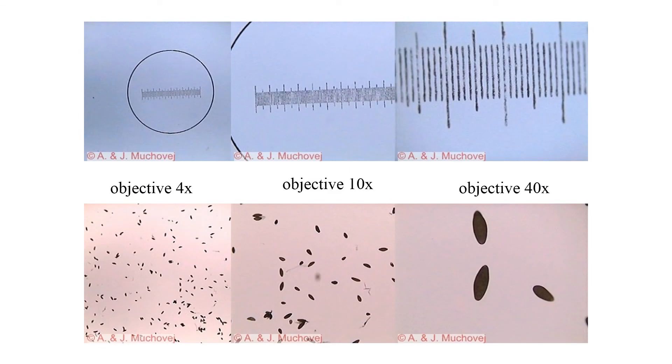Now here we have images that were taken with different objectives giving us different magnifications. On the left are the 4x, the middle are the 10x, and on the right are the 40x. These are three photos of the same material and you can see the amount of approximation you get on each one.